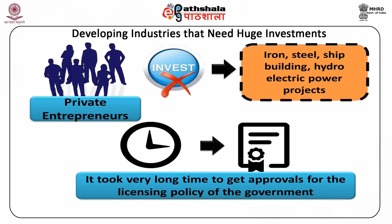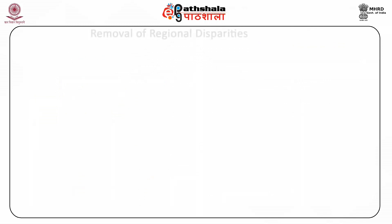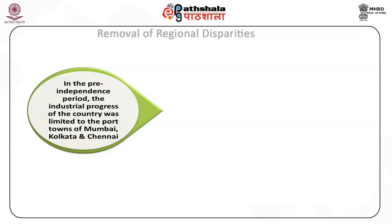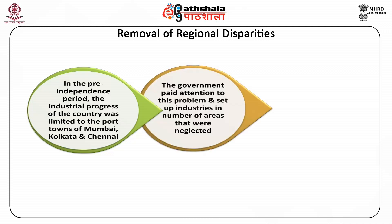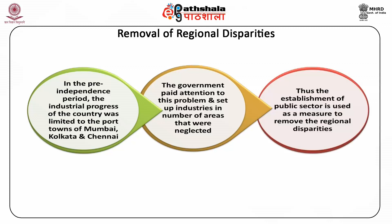Removal of regional disparities: In the pre-independence period, the industrial progress of the country was limited to the port towns of Mumbai, Kolkata and Chennai, while the other parts of the country lagged far behind. The government paid attention to this problem and set up industries in a number of areas that were neglected by the private sector. Thus, the establishment of public sector is used as a measure to remove regional disparities in industrial development. For example, Bhilai Steel Plant, Rourkela Steel Plant, Durgapur Steel Plant, and Bokaro Steel Plant — all four steel plants of the public sector were set up in backward states.